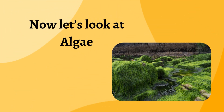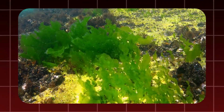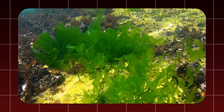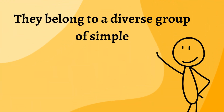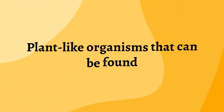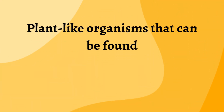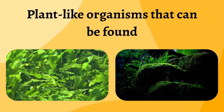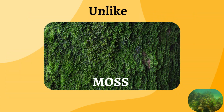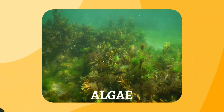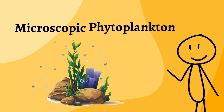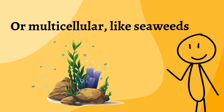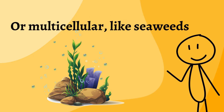Now let's look at algae. Algae aren't considered true plants. They belong to a diverse group of simple, plant-like organisms that can be found in water or damp environments. Unlike moss, algae can be unicellular, like microscopic phytoplankton, or multicellular, like seaweeds.